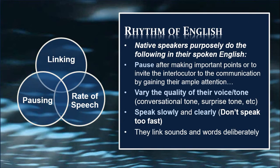Next, linking, pausing, and rate of speech. Native speakers purposely do the following in their spoken English: they pause after making important points, to invite the listener into the conversation. They vary the quality of their voice or tone — sometimes conversational, sometimes surprised. They speak slowly and clearly, not too fast. We are often confused because they link sounds and words deliberately, which makes them seem fast when they are actually speaking slowly and clearly.